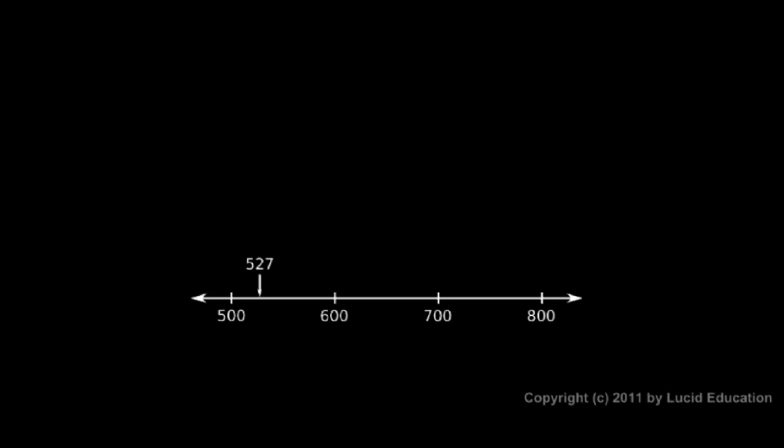Here's another example. We see a number line calibrated in increments of 100: 500, 600, 700, 800. The number 527 is marked — it sits between 500 and 600. Even without a number line, you can probably tell mentally that 527 is closer to 500 than it is to 600. So if we were to round 527 to the nearest 100, we would say 527 is approximately equal to 500. That's a better statement than saying it's approximately 600, because it's closer to 500.